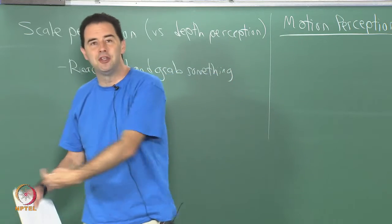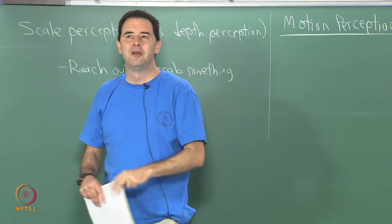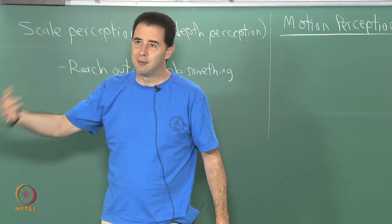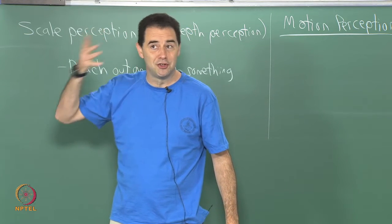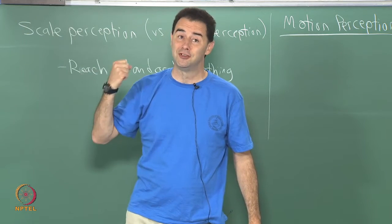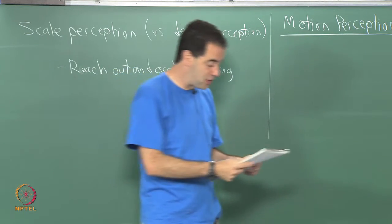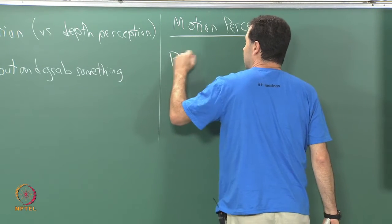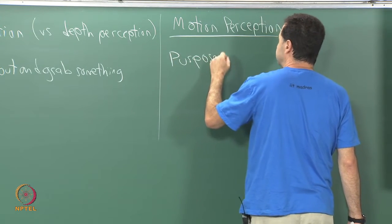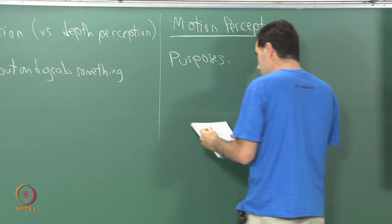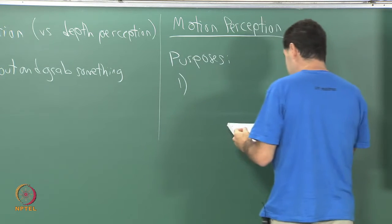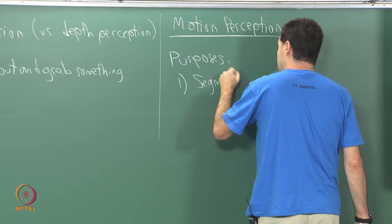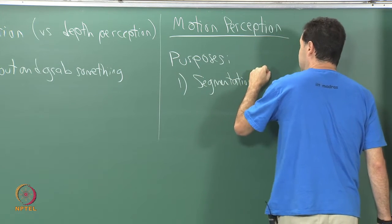As we go through these pathways from the sense organ all the way up to the higher parts of the brain, there is hierarchical processing going on and a perceptual process in there, and that is what we are trying to understand and characterize. So what are the purposes for motion perception? One of them is segmentation or segregation.